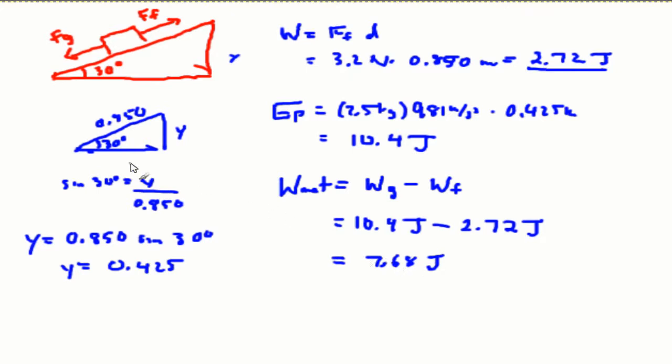However, this question asks us to determine the velocity as it reaches the bottom. So as the potential energy is decreased, the kinetic energy is going to increase. So what we do is we let EK equal to 7.68 joules.